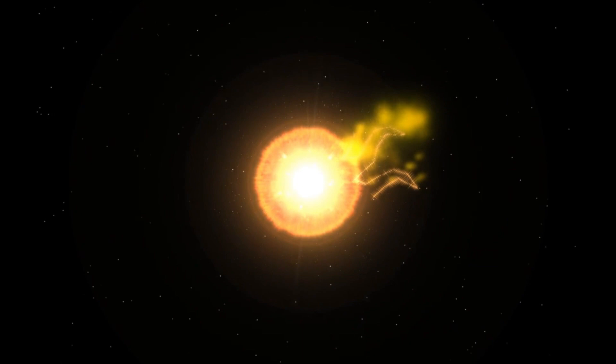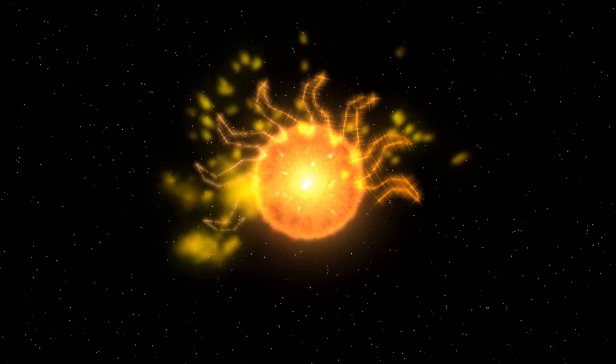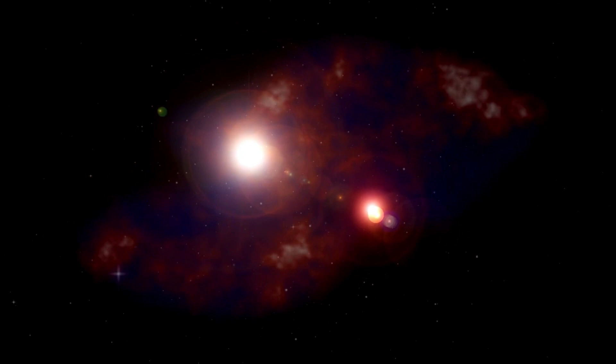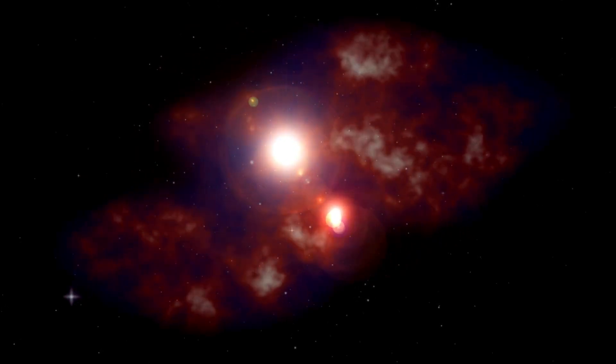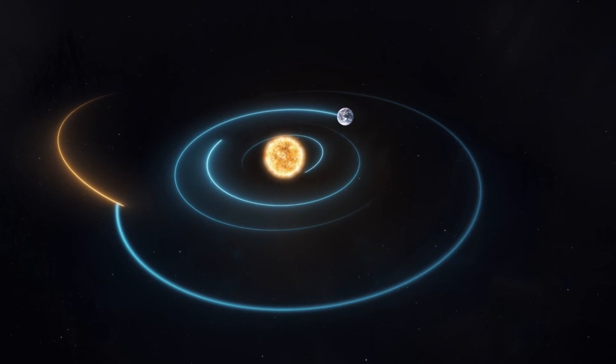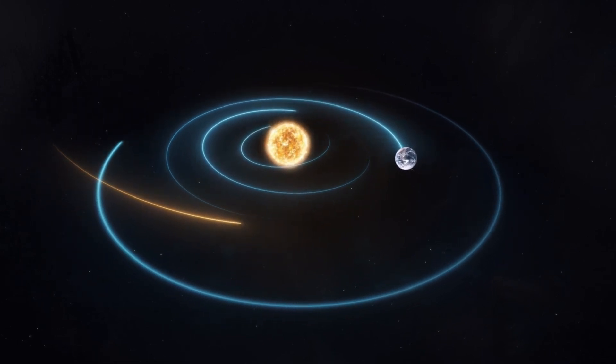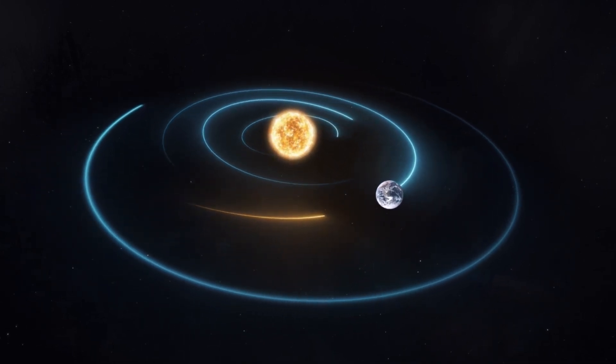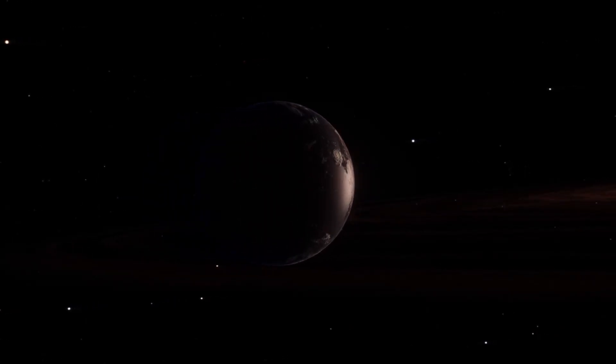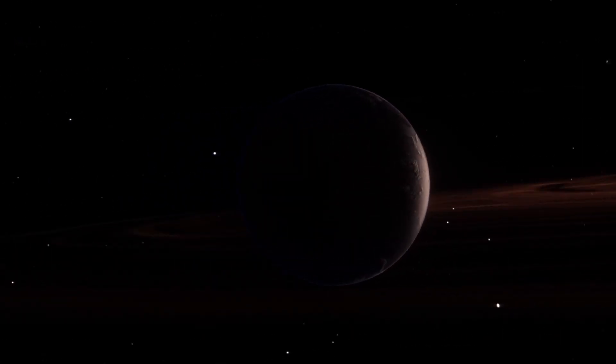The planet's orbit is extraordinarily close to its star—approximately 7.3 million kilometers, or roughly 20 times closer than Earth is to the sun. This proximity allows Proxima B to complete an entire orbit in only 11.2 Earth days, creating an unusual and intense dynamic between the planet and its star. Proxima Centauri, a red dwarf, emits only a fraction of the energy our sun does, but its light is concentrated in the infrared spectrum.